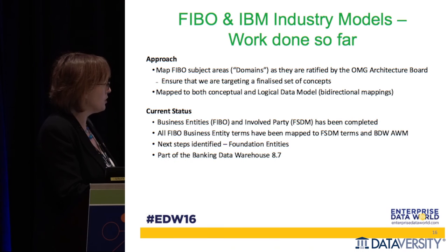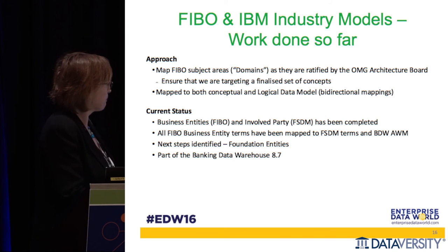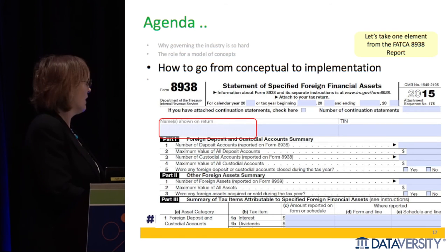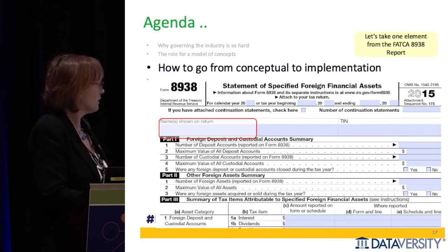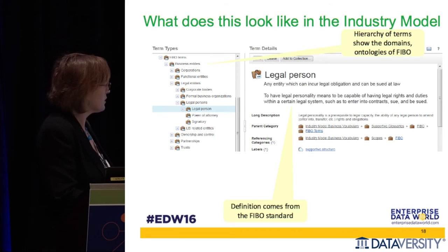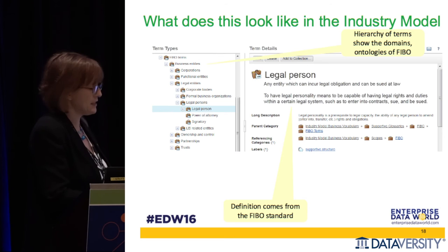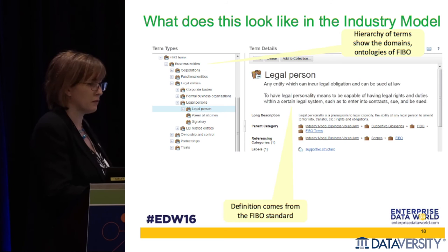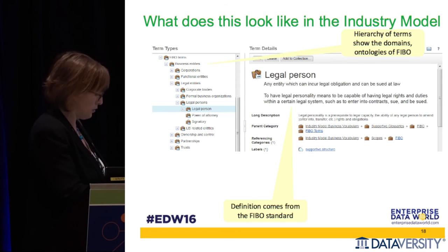We're going to take an example: we'll use a report from FATCA to figure out what part of the entity relationship model you need and then use that to generate data warehouse tables. Here's one of the FATCA reports — one field is 'name on the return,' which is essentially a legal entity. This is in a tool we called IGC, or Information Governance Catalog. It allows us to keep a hierarchy of the information we have in FIBO, and here you can see the domains and ontology of FIBO, and then the definition — straight out of FIBO.